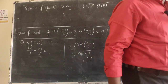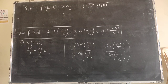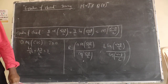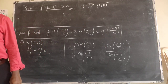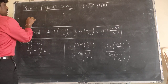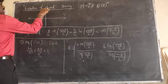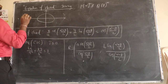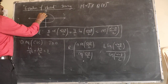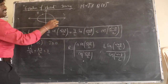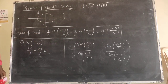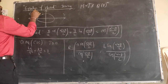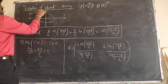Hello dear students, good morning. Let us discuss today's lecture: equation of the chord joining two points P(α) and Q(β). This was explained in lecture number three. Here we have the x-axis and y-axis, and this concept relates to the ellipse. If we take any point P with parameter α, the parametric form is a·cos(α), b·sin(α).